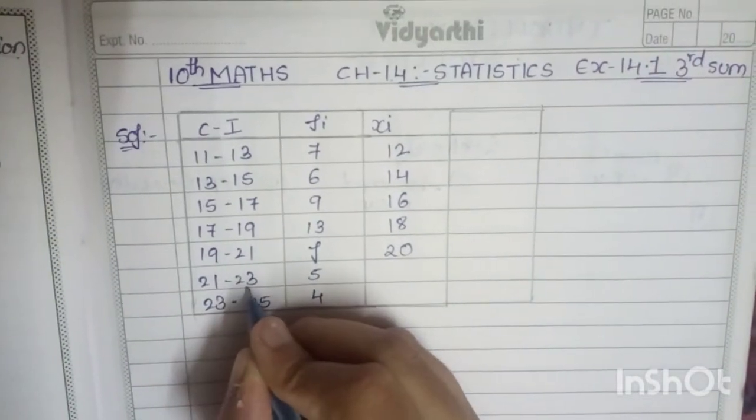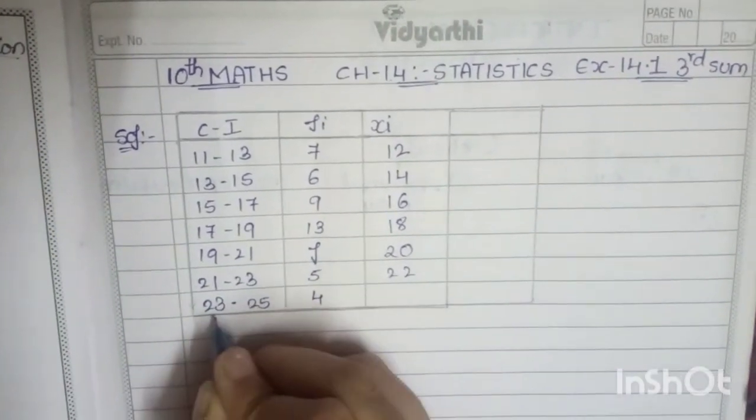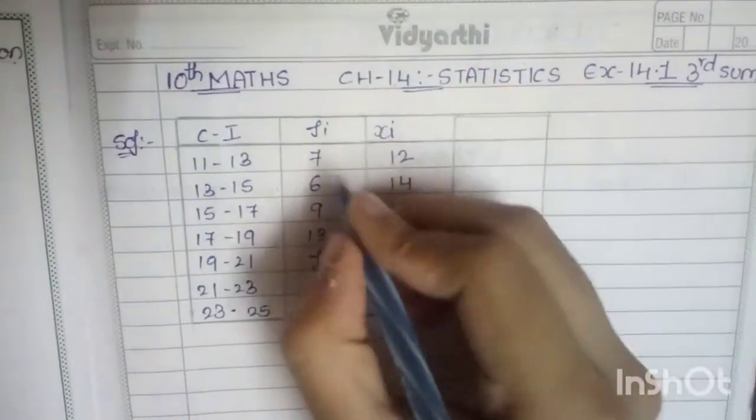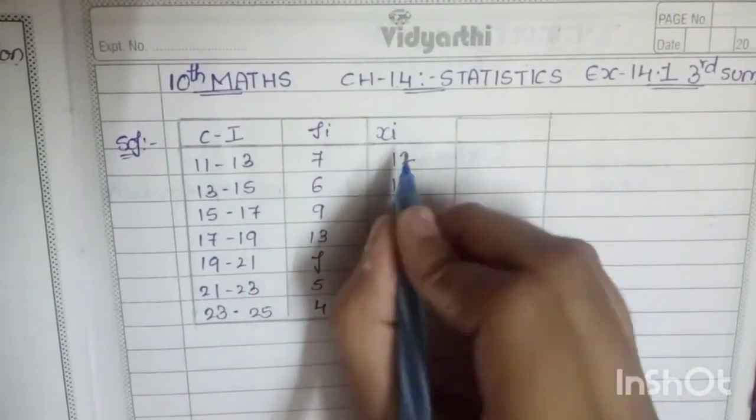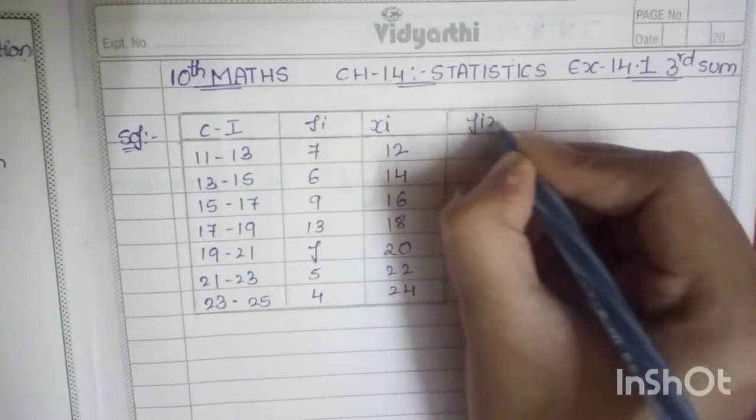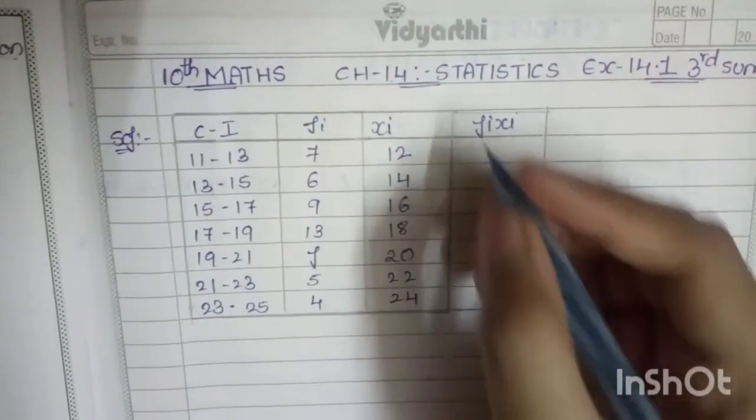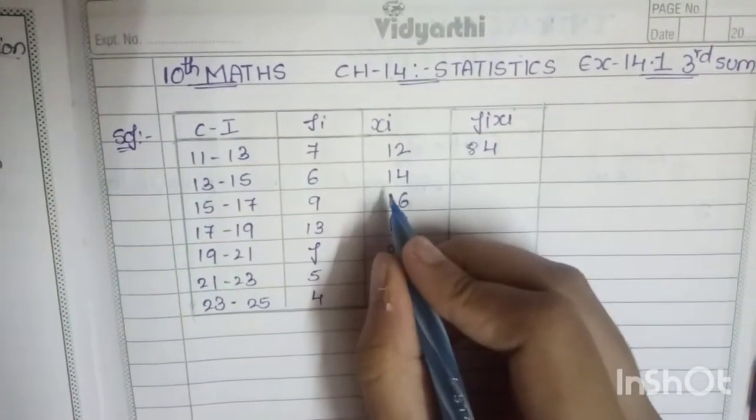Now it's time for multiplying these two columns, that is fi and xi. So when we multiply 7 into 12, the answer is 84. 6 into 14 is 84.